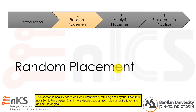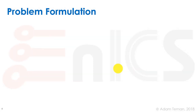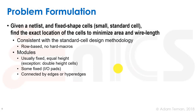Let's look at a random placement algorithm. Given a netlist and fixed-shaped cells — small standard cells — we want to find the exact location of cells to minimize area and wire length. This is consistent with the standard cell design methodology: row-based, with fixed-height modules. Hard macros are excluded to simplify things. Fixed places are IO pads or macro pins, connected by edges or hyper-edges.